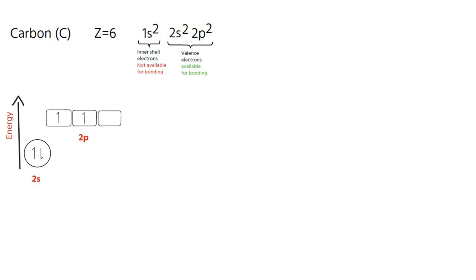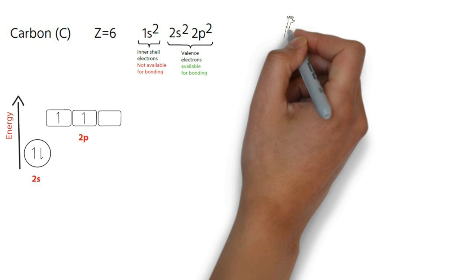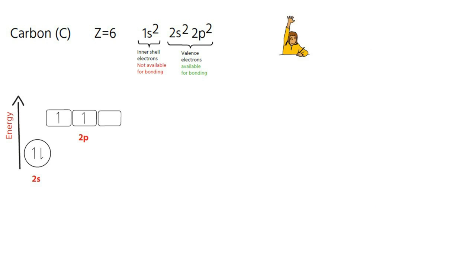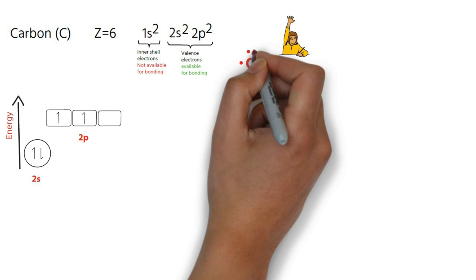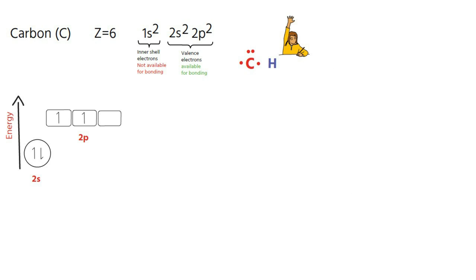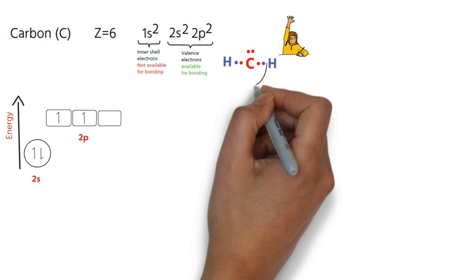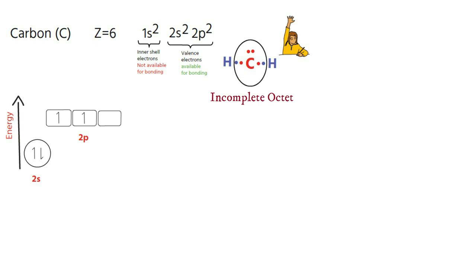Thus carbon has only two unpaired electrons. So how many bonds should it form? Yes, you are right, only two bonds. That means carbon should be bivalent. But if carbon were to form only two covalent bonds, it wouldn't complete its octet.